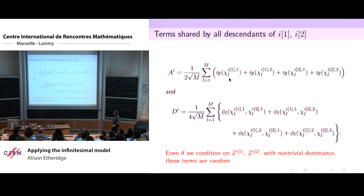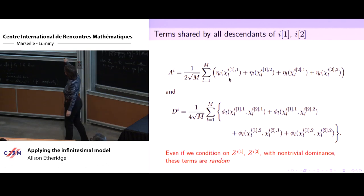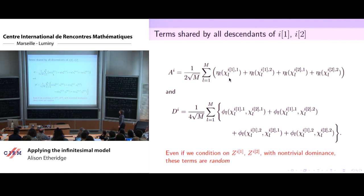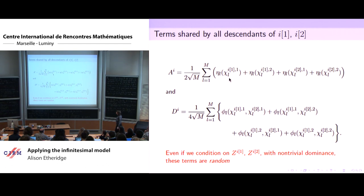Even if we know the trait values in the parents, we do not know what this shared component is, because these alleles are now occurring in different combinations — one was an allele in parent one, another was an allele in parent two, completely different combinations. The residuals are exactly what Amandine had — the haploid version — with xi minus one half, and one half minus xi. But now we also have the rather annoyingly complicated terms corresponding to the dominance component, centered as x_i times y_i on one quarter.